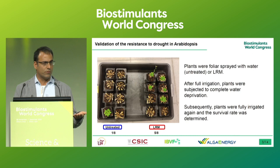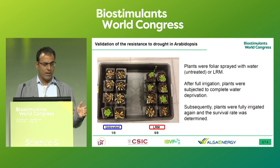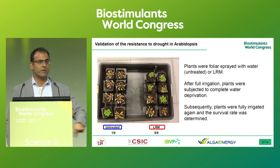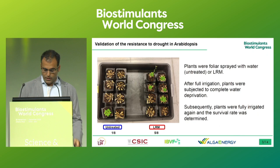To validate that these transcriptomic changes actually translate into an observable phenotypic response, we monitored the development of Arabidopsis plants under drought conditions. Plants were separated into treated and untreated groups, initially fully irrigated, then subjected to a prolonged period of complete water deprivation, and afterwards re-irrigated. We found a much higher recovery rate in plants treated with the biostimulant than in plants treated with only water, implying that what we observed at the transcriptomic level translates into a phenotypic observation.